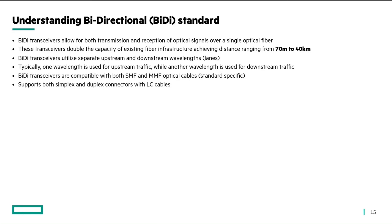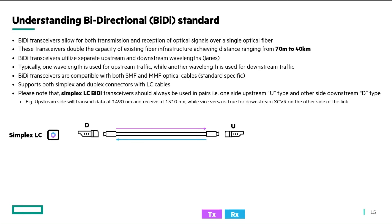Bi-directional transceivers are compatible with both SMF and MMF optical cables and support both simplex and duplex LC connectors. There are two kinds: simplex LC bi-di and duplex LC bi-di. A simplex LC bi-di uses a simplex LC connector over an optical fiber cable and will have only a single port. Simplex LC bi-di transceivers come in two types — type U and type D — and both should always be used in pairs.